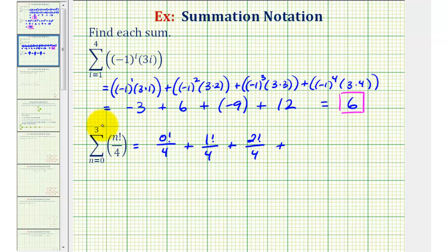And then finally when n is three, we have our last term, which would be three factorial divided by four.